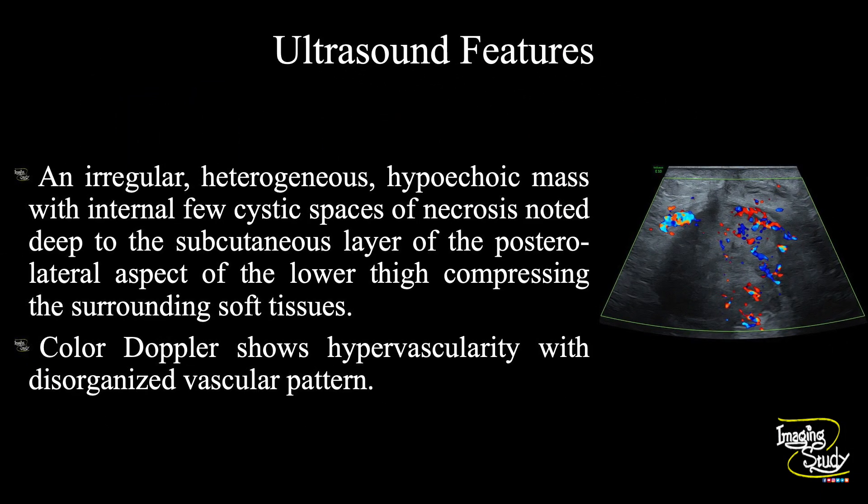In summary, an irregular heterogeneous hypoechoic mass with internal cystic spaces of necrosis is noted deep to the subcutaneous layer of the posterolateral aspect of the lower thigh, compressing the surrounding soft tissues. Color Doppler shows hypervascularity with a disorganized vascular pattern. These features conclude it as a soft tissue malignant lesion, possibly soft tissue sarcoma, which is already proven by histopathology.